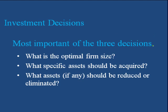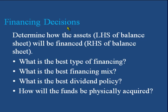The second important decision is the financing decision. It is related with the right-hand side of the balance sheet, which includes owner's equity and liabilities. Owner's equity and liabilities are sources of funds. The finance manager decides the best type of financing available, the best financing mix, the best dividend policy, and how funds will be physically acquired if needed.